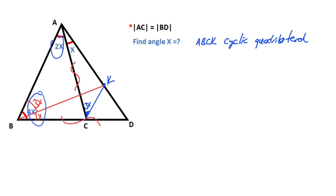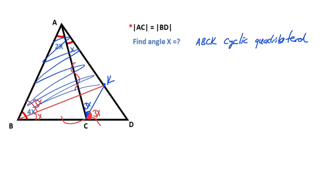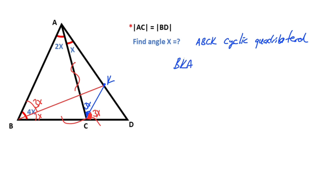And we know that 2 in triangles equals 1x triangles, so here must be equal 6x, therefore 3x left here. If you focus on triangle A, B, K, this triangle is an isosceles triangle.